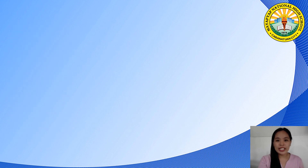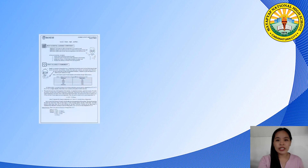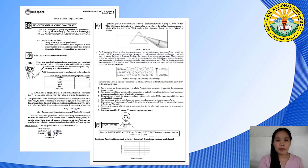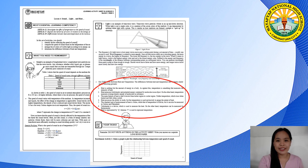About heat and temperature, there are seven key differences between heat and temperature presented in your learning activity sheet. Kindly read it for a clear understanding of the difference between the two.